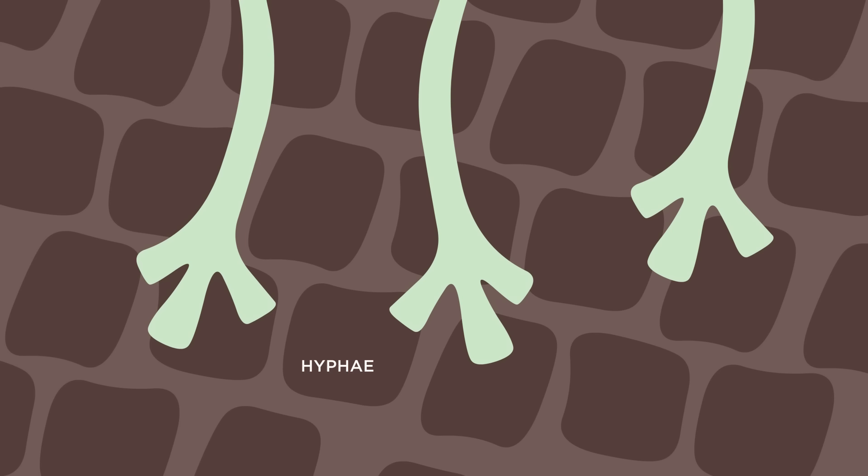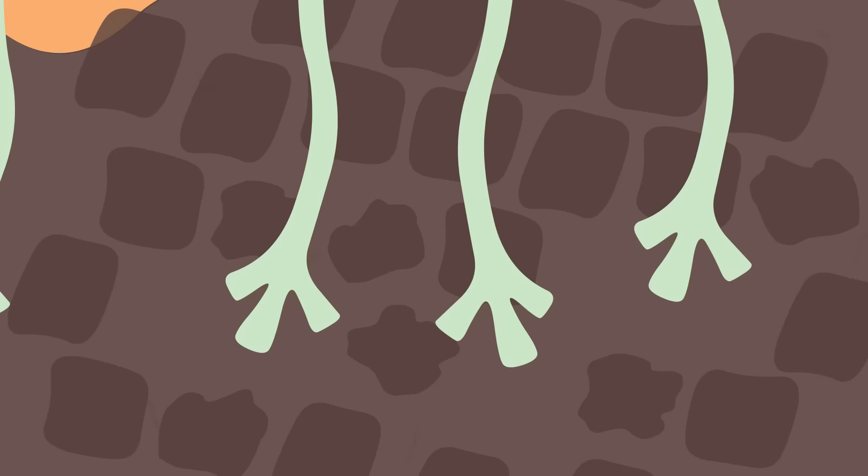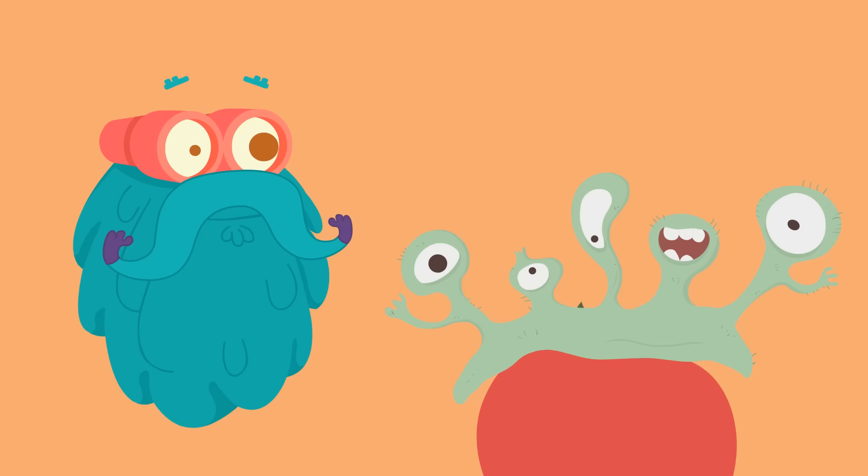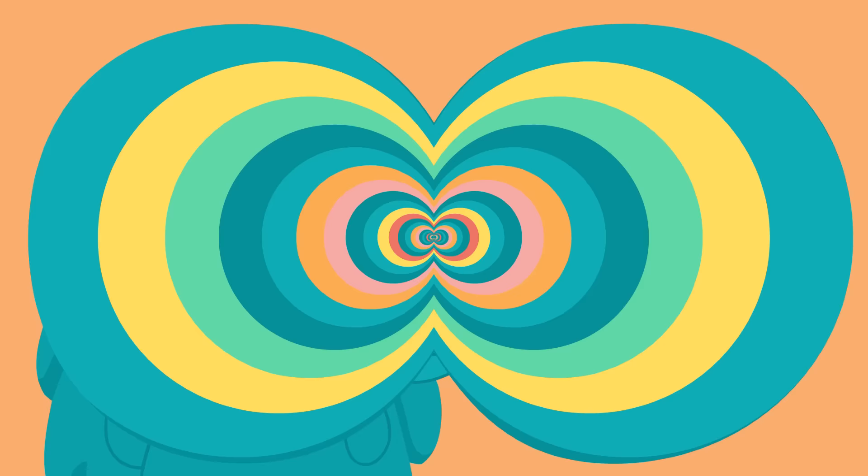Most fungi feed through microscopic threads called Hyphae. These threads dig into a food source and release chemicals that break down the food. Then the fungi digest it and use it as nutrients. Fungi feed on dead animals, bird droppings, manure, fruit. They eat almost anything that was once alive.